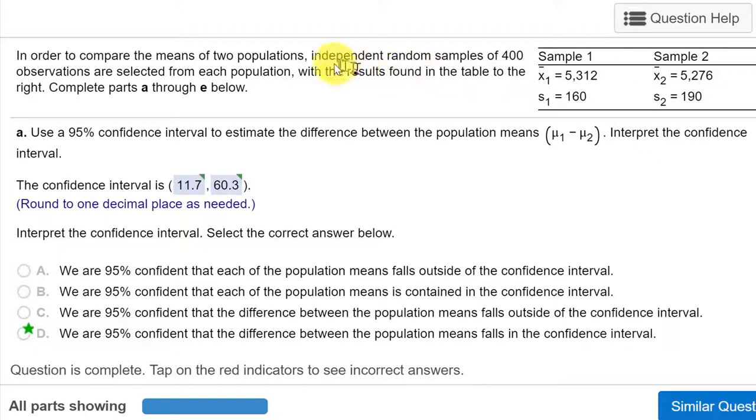but we're told that we have independent random samples of 400 observations each. Unlike 233 and the Larsen's text where the determinant whether to use a z test or a t test is knowledge of the population sigmas, here we don't know the sigmas, therefore we would use the t test in the Larsen 233 course.